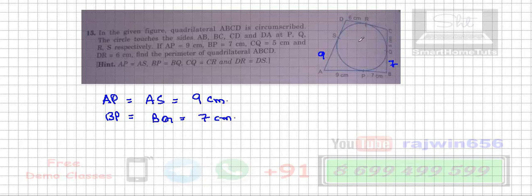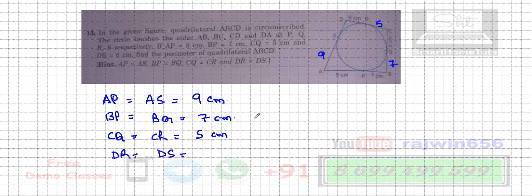The next part is CQ is equal to CR, so this is going to become 5 centimeters. And lastly, DR is equal to DS, this is going to become 6 centimeters.